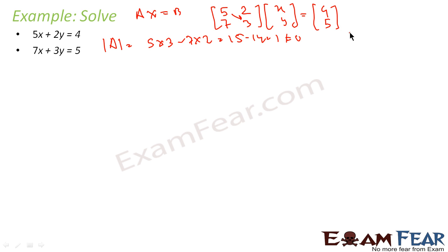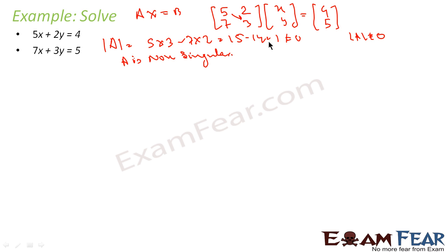So my conclusion is: determinant of A is not equal to 0, so A is non-singular. Since A is non-singular, the system is consistent. Since the system is consistent, I can find the solution.